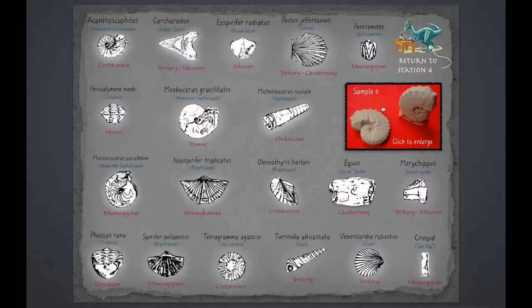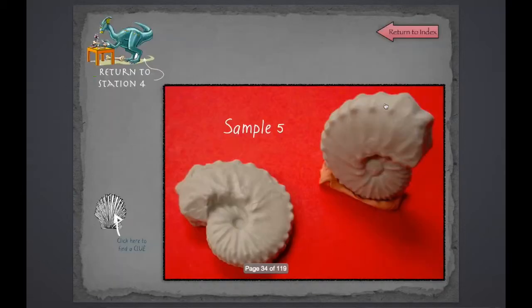But again, looking at the detail, I see ridges in our specimen, but I don't see ridges on this one. I see suture lines with a different pattern on this one. So I'm thinking Acanthoscaphides, an ammonite cephalopod from the Cretaceous period, is this sample.